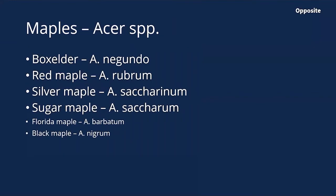The first group is maples. In Illinois there are six native maple species; we'll cover four of them: box elder, red maple, silver maple, and sugar maple. As we learned in session one, maples as a group are opposite trees — they have oppositely arranged buds, branches, and leaves. So all of these maples fall into that opposite grouping.